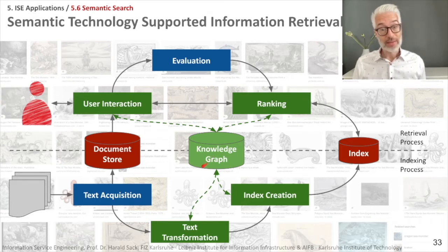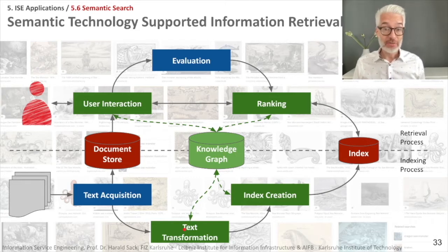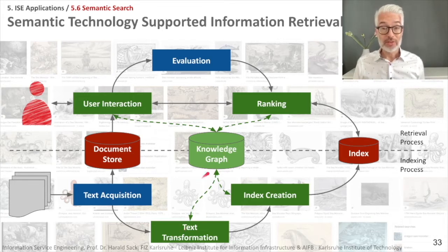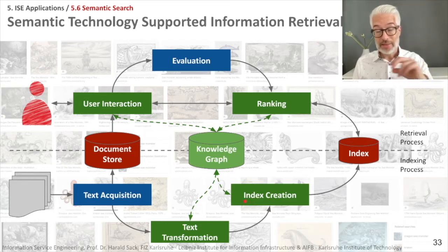This is connected tightly to the text transformation process, because if you have natural language text, it has to be opened up and all of the entities' relations have to be somehow mapped to a knowledge graph, which also reflects the index creation because there not only words are in the index, but also entities.